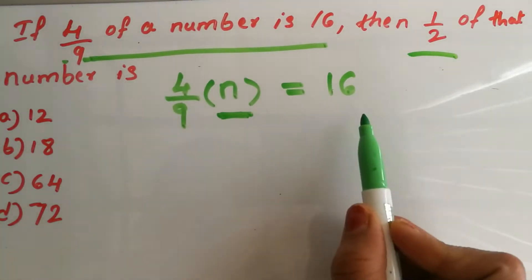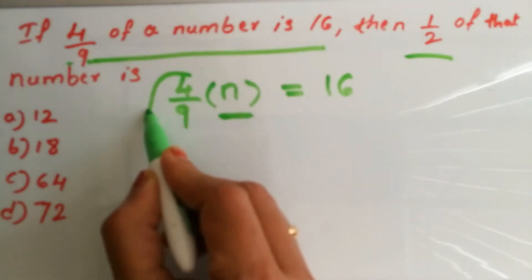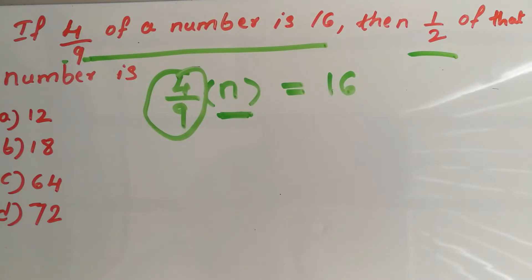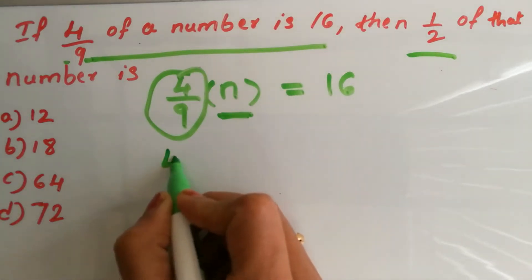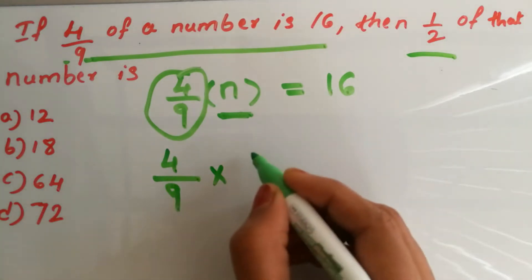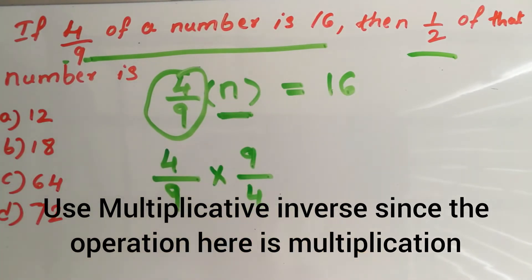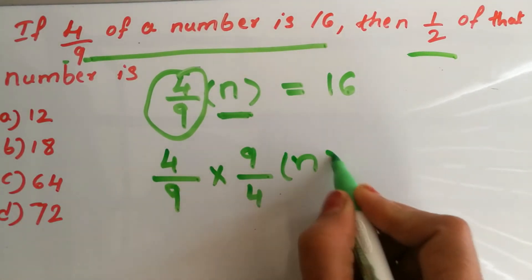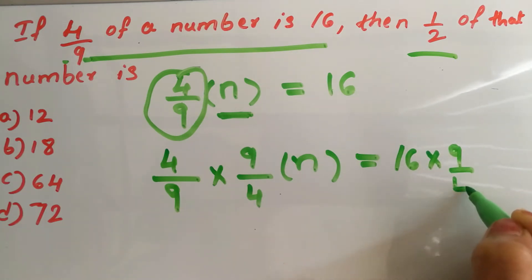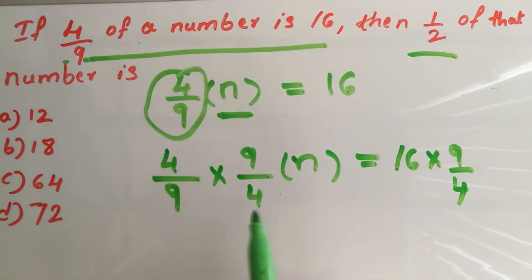We have to find n now. This is an equation. To cancel 4 over 9, we have to do the reverse operation — we have to multiply by its inverse. The inverse of 4 over 9: just interchange its numerator and denominator. Multiply by its inverse, that is 9 over 4. Since it's an equation, you have to do the same operation on both sides — multiply by the inverse on both sides.